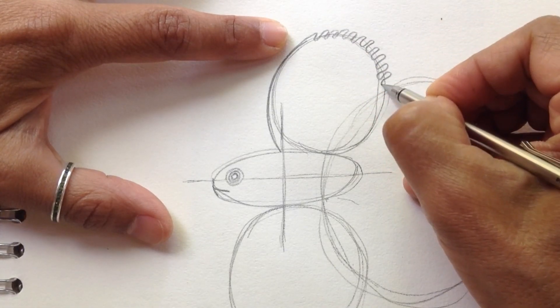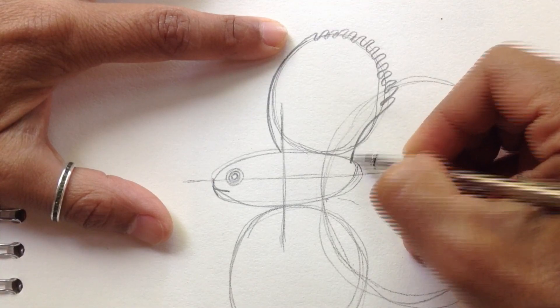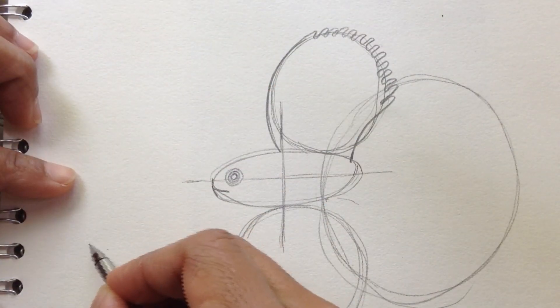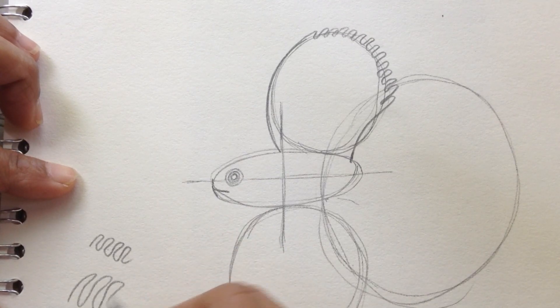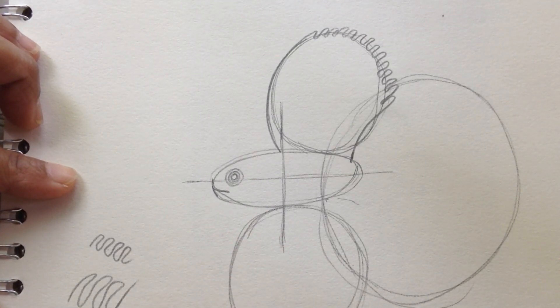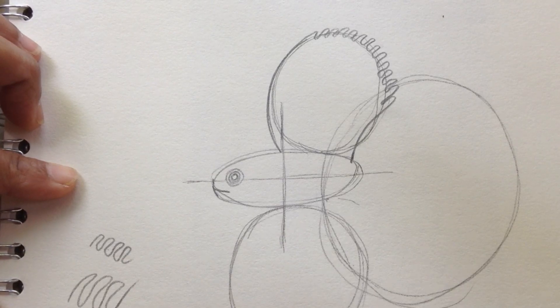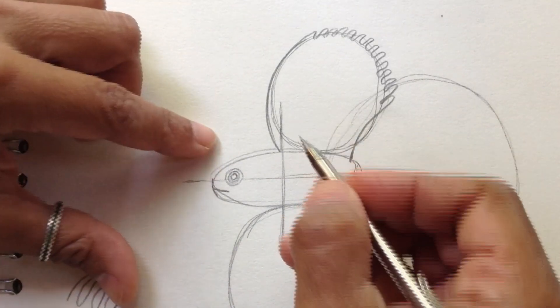Some of them have them small. Some of them have these curves like this. Some of them have them bigger. And some of them even have like spikes. It's just amazing how different these fish are.